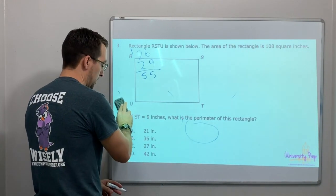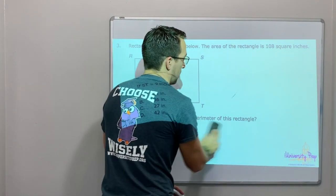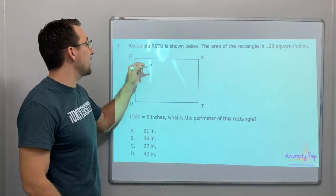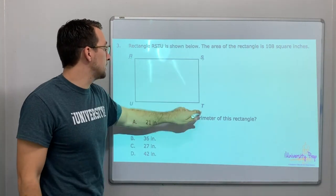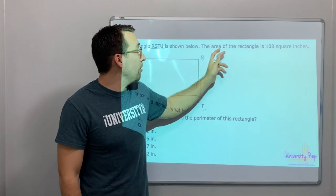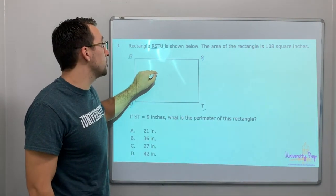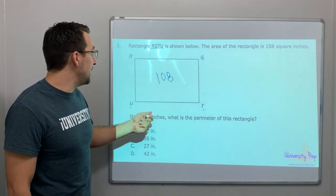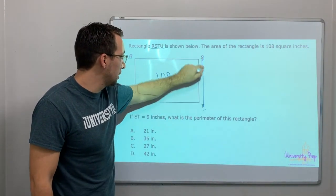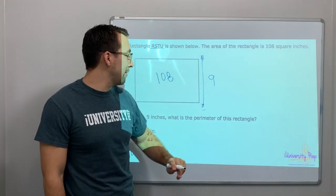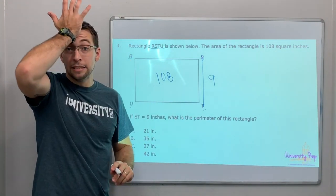Last question and then we will move on to the next video. We're going to have two videos for this cheat code. Rectangle RSTU is shown below. The area of the rectangle is 108 square inches. If ST is 9 inches, what is the perimeter of this rectangle? We have to know what UT is.